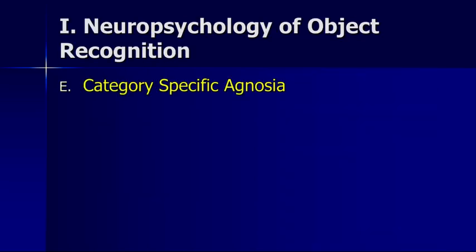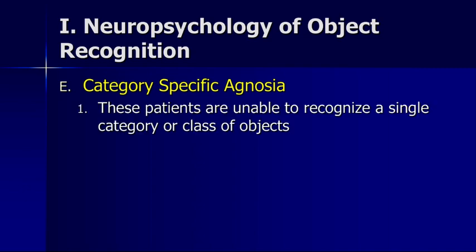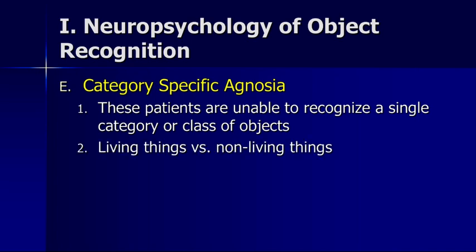Finally we have what's called category-specific agnosia. These patients are unable to recognize only a single category or class of objects. It tends to be fairly unusual — things like living things versus non-living things, so they can identify chairs but not dogs, or dogs but not chairs. Sometimes it's even as highly specific as musical instruments — they can recognize everything else but not musical instruments. This illustrates a little bit about how this information is stored — we store information about our world based on what it is, and we categorize these things in the visual system as well.